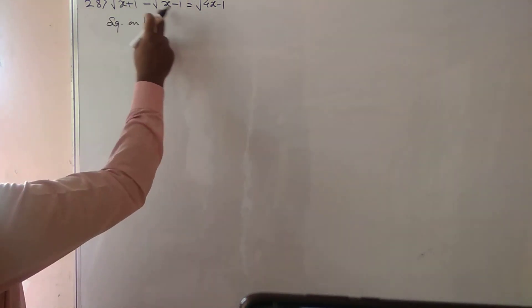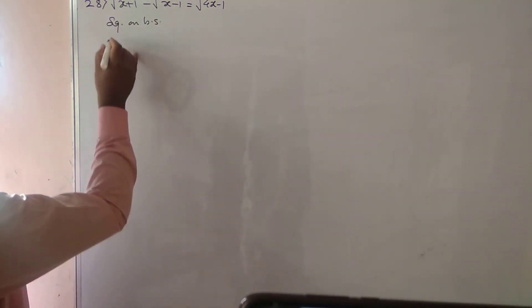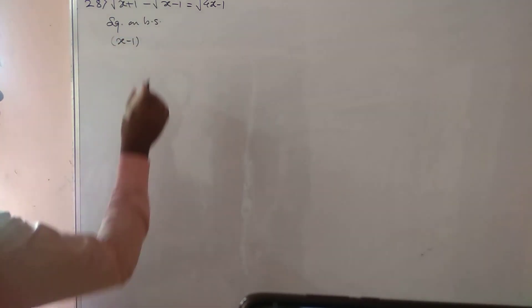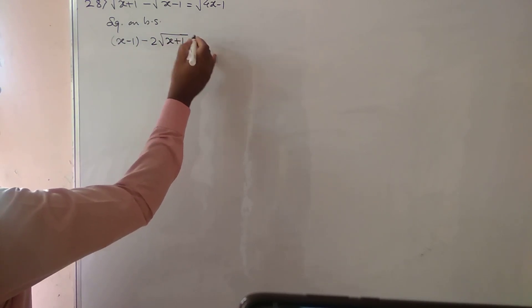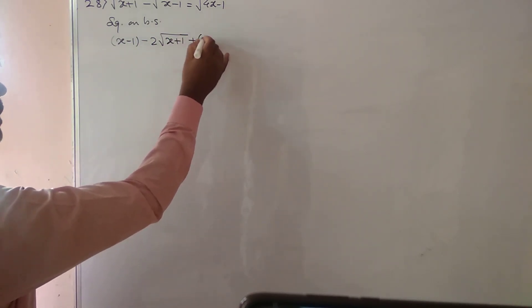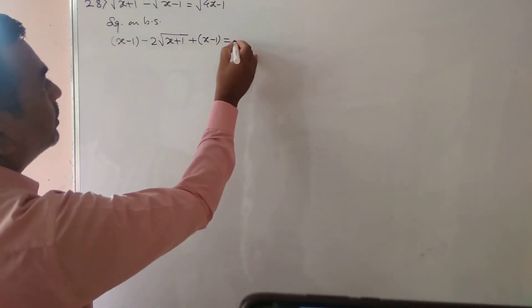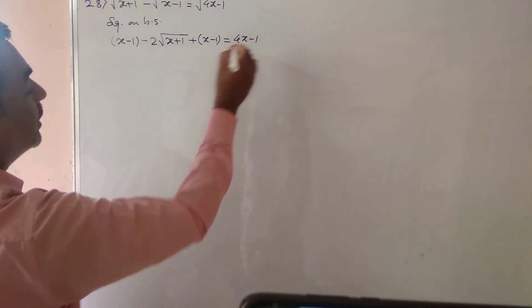Left hand side for a minus b bracket square, and it is what? It is a square minus 2ab plus b square. So plus ho jayega x minus 1, which is equal to this square of 4x minus 1.